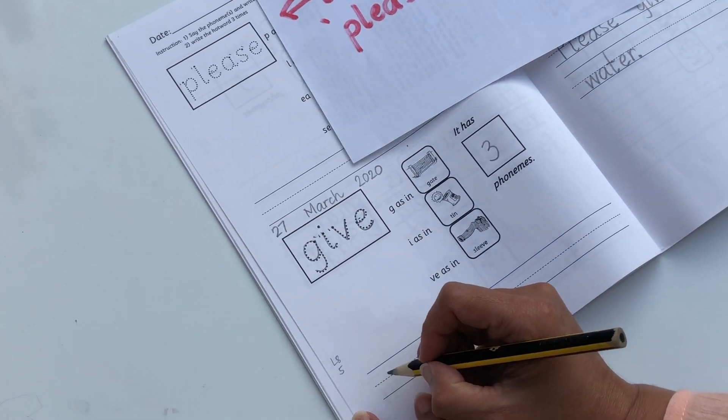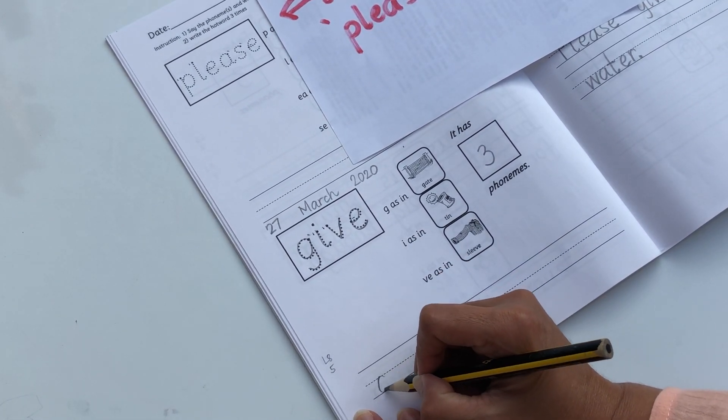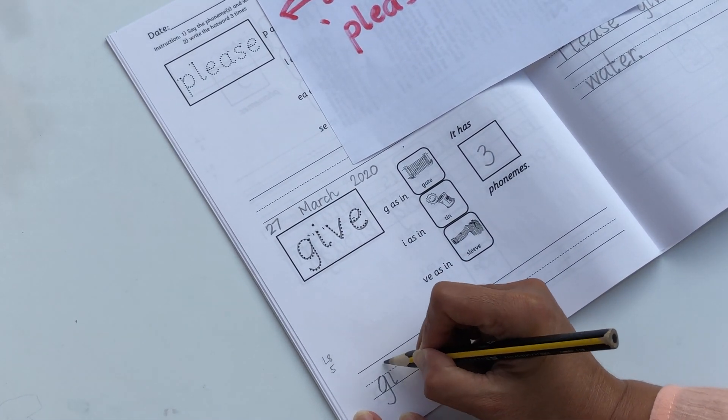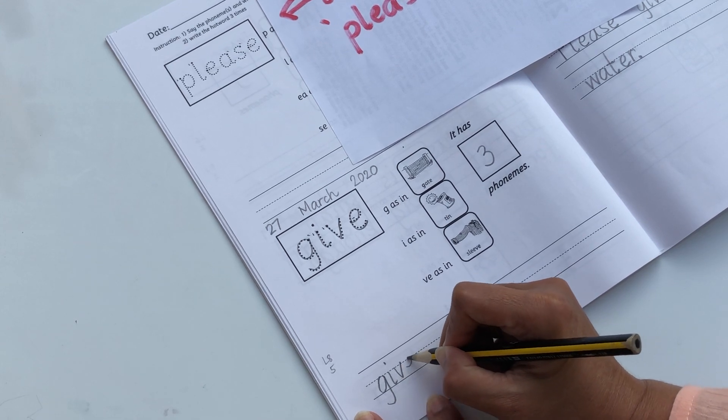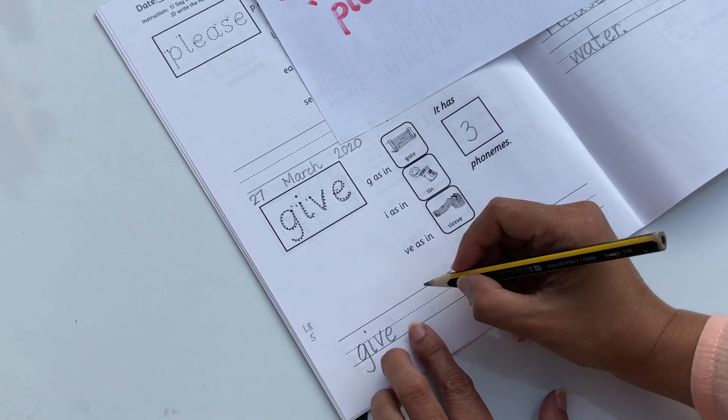So write the word three times. Give: g-i-v-e. Okay, finger space.